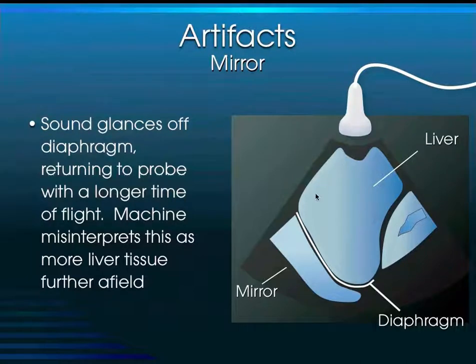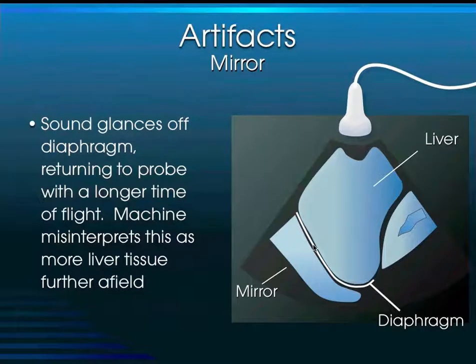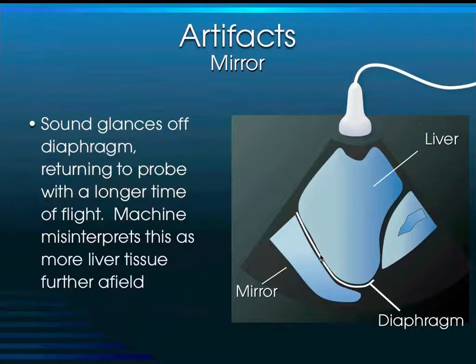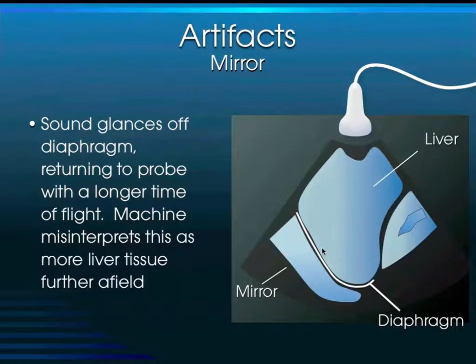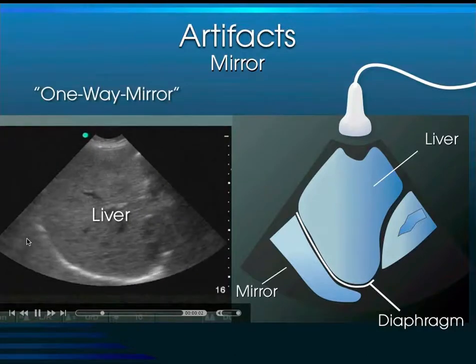Sound goes through the liver in Morrison's pouch — the kidney, the liver, Morrison's pouch in the right upper quadrant view — and as it travels through the liver it encounters the diaphragm. In a normal chest, sound cannot cross the diaphragm but instead rolls along its edge and eventually returns to the probe. The machine misinterprets this as there being further tissue, because it took the sound longer to return. The material plotted further down on screen corresponds to what the sound was traveling through — creating a mirrored image.